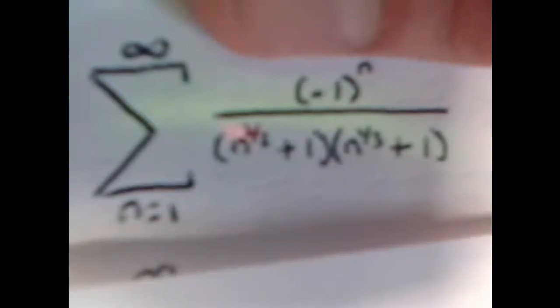Now we're going to go into a more complicated example to make sure we've mastered the material. We're looking at the sum from n equals one to infinity of negative one to the n — an alternating series — divided by n to the one-half plus one, multiplied by n to the one-third plus one. Again, we're going to test if it's absolutely convergent first.